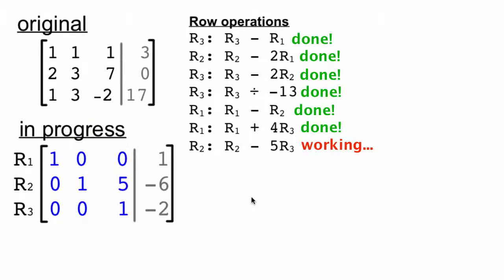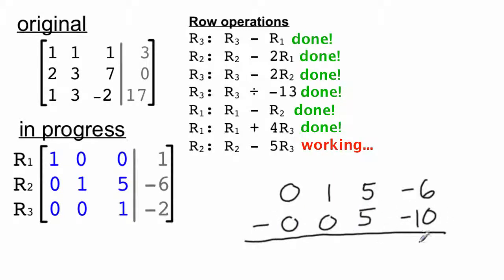One final row operation. We want this 5 right here to become a 0, because then we'll have zeros everywhere except for the diagonal, and the diagonal needs to be ones. And then we update the row.